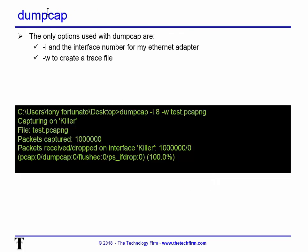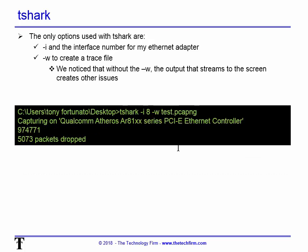DumpCap — how am I running it? We have dash-i for the interface; in my case my interface happens to be number 8, yours will be whatever it is. Dash-w is going to write to a file. You can see it says capturing, the file name, how many packets I captured, and how many it thinks it dropped. And you'll see why that comes into play later on.